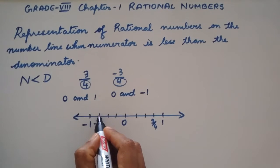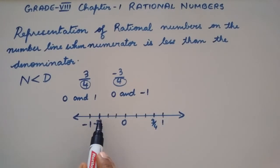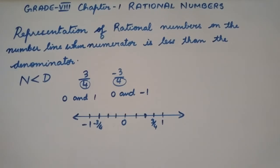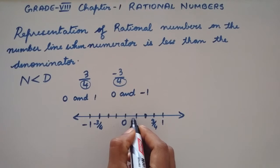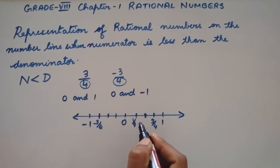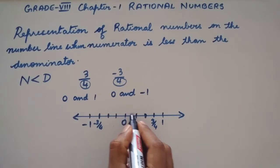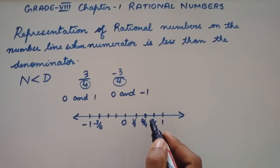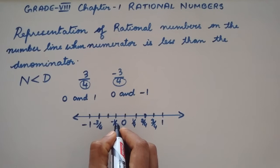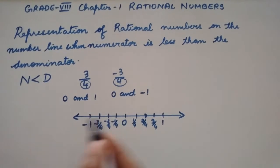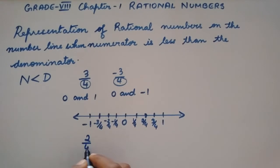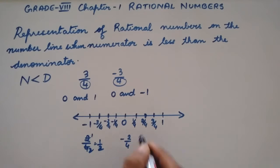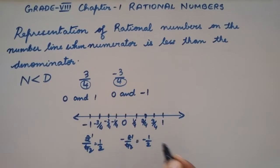We have plotted these points. But which numbers are plotted at the other marked points? Since this is one part from 0, we mark 1 by 4 here. And since these are two parts from 0, we mark 2 by 4 here. Similarly, we can plot minus 1 by 4 and minus 2 by 4 on the left side. Now, 2 by 4 is nothing but 1 by 2, and minus 2 by 4 is nothing but minus 1 by 2.